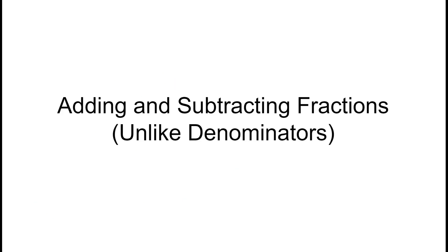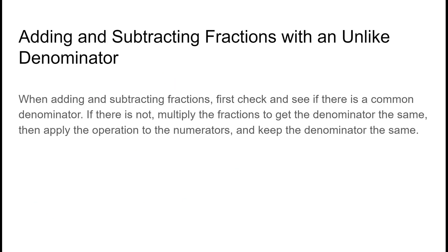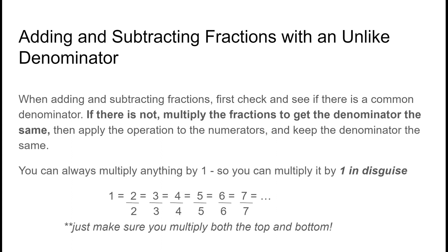Now we're going to add and subtract fractions with unlike denominators. When that happens, we need to get the denominators the same. We can multiply anything by one because that doesn't change it — what I like to call 'one in disguise.' One is the same as two over two, three over three, four over four, five over five. So we can multiply the denominator by a number as long as we also multiply the top.